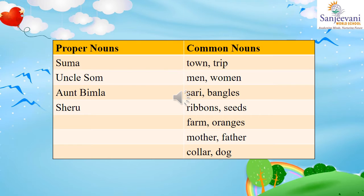'Suma bought oranges for her mother and father.' Suma is again a proper noun, but as we have already written it, we will not write it. Oranges — as we had learnt, all names of fruits are common nouns, like strawberry. So oranges are also common nouns and we write oranges in the common nouns column. Mother and father are names of people, so mother and father are also common nouns.